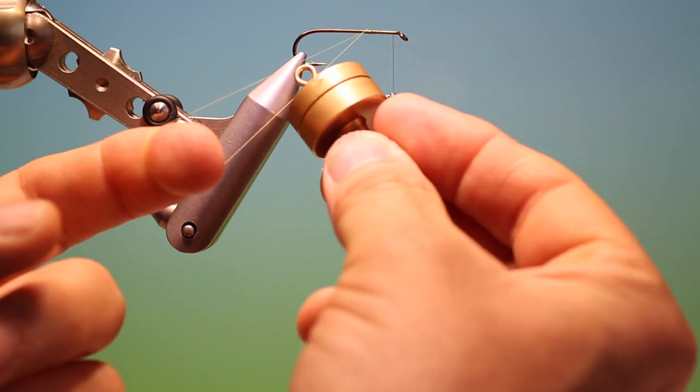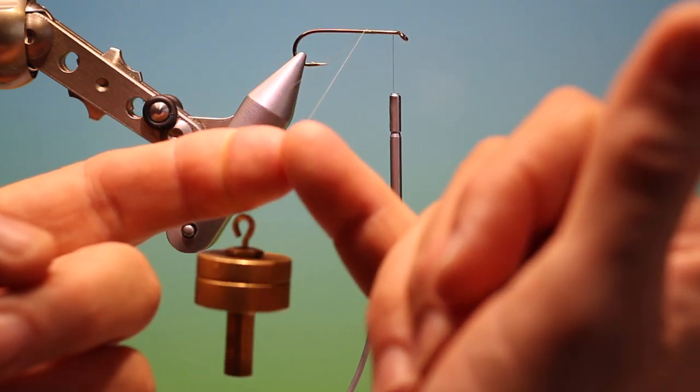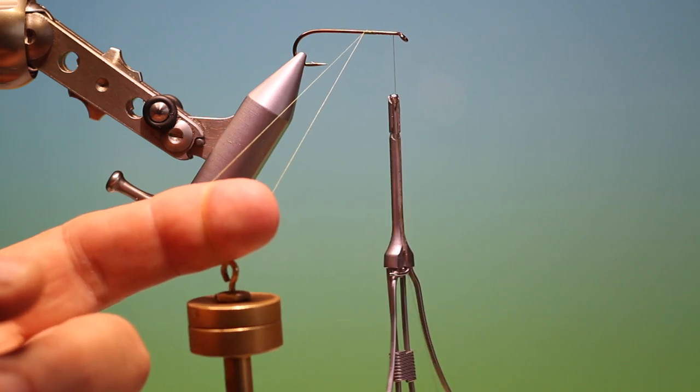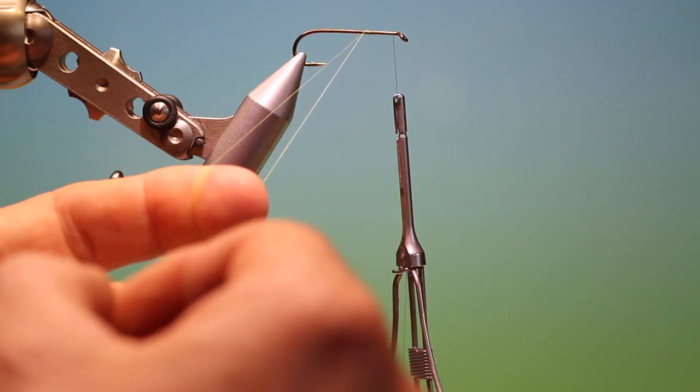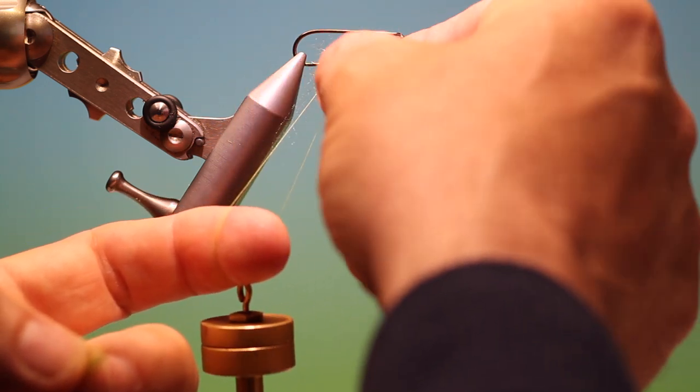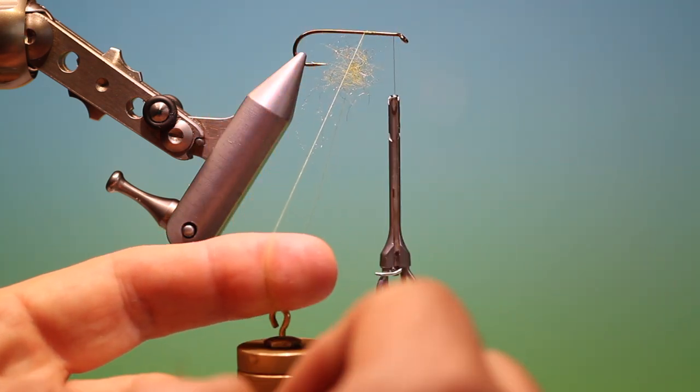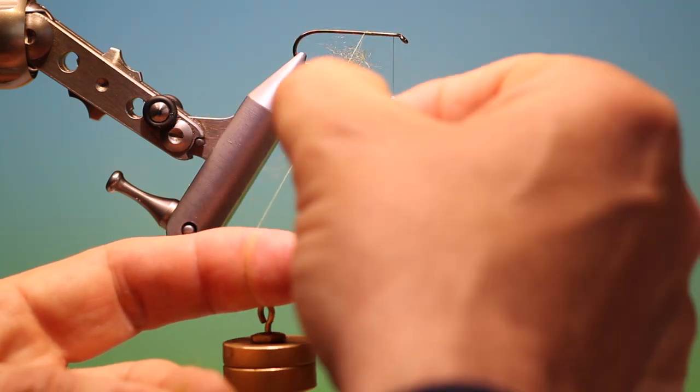Then we take our dubbing spinner and place it on the loop, letting it slide down to the bottom while keeping our finger in. Now we take a little dubbing—this is a synthetic natural blend—and you see I've left just a short distance to the hook shank.